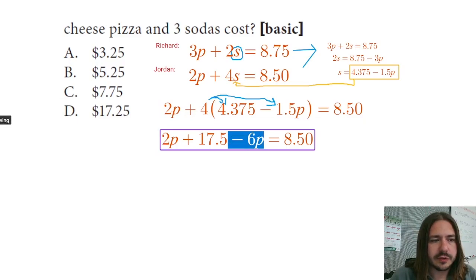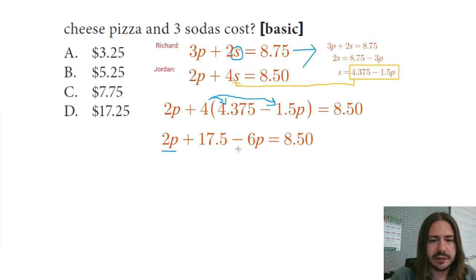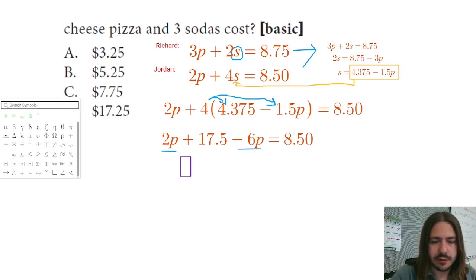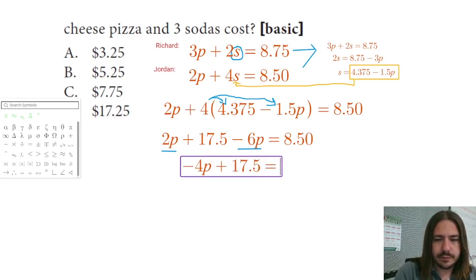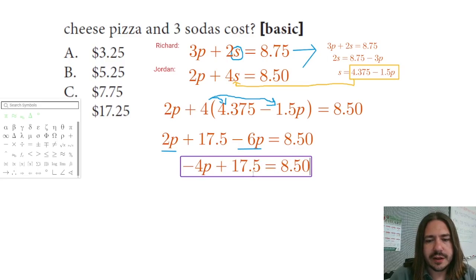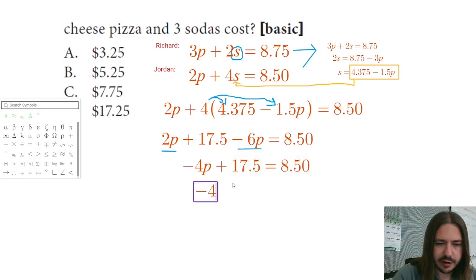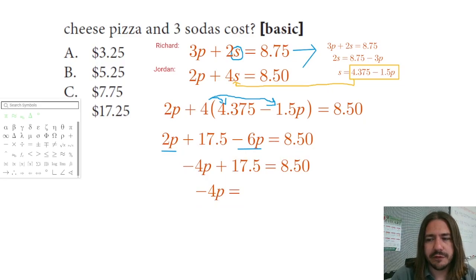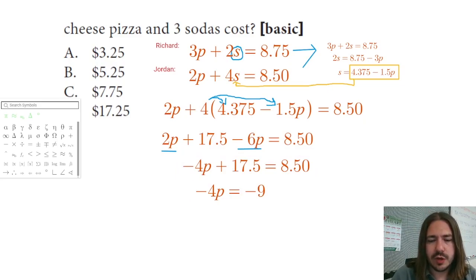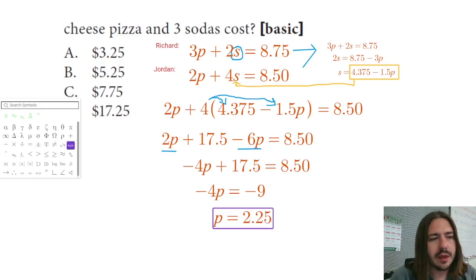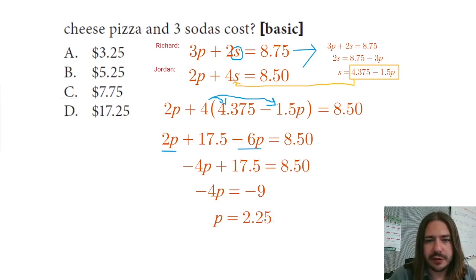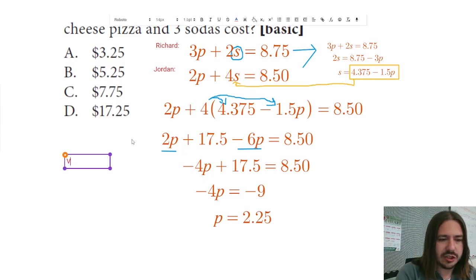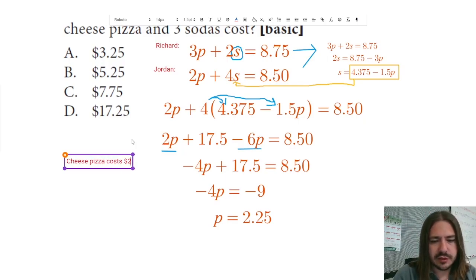Now we combine like terms: 2P and −6P give us −4P. Then we subtract 17.5 from both sides, giving −4P = 8.5 − 17.5 = −9. Dividing by −4 gives us $2.25. So we know the cheese pizza costs $2.25 per slice.